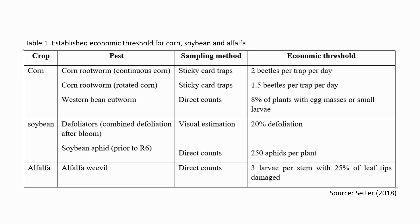Here we will look at the crop, pest, sampling method, and economic thresholds. For rootworm in continuously grown corn, the economic threshold is 2 beetles per trap per day, sampled using sticky cut traps. For rotated corn, it is 1.5 beetles per trap per day using the same method. For western bean cutworm, the threshold is 8% of plants with egg masses or small larvae, done through direct counting. For soybean defoliators, it is 20% defoliation, assessed by visual estimation. For soybean aphids, the threshold is 250 aphids per plant, sampled through direct counting.